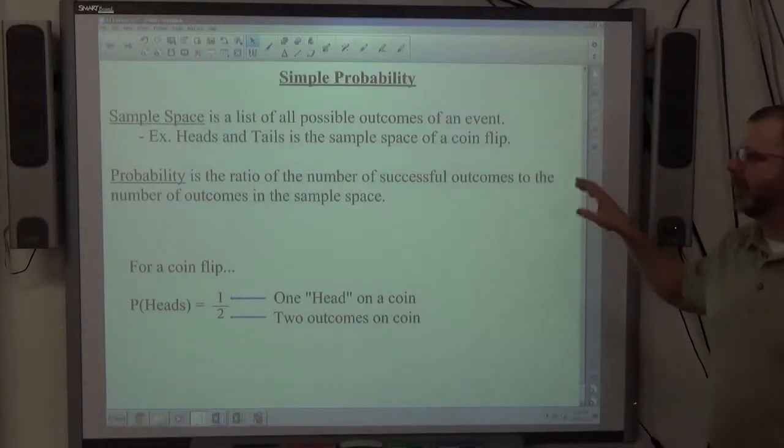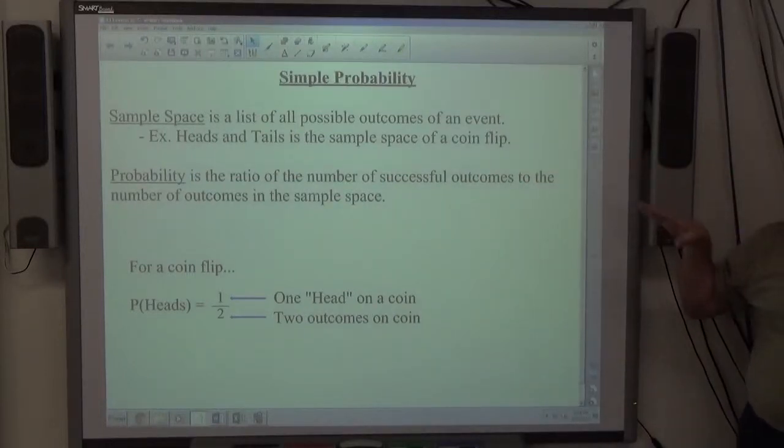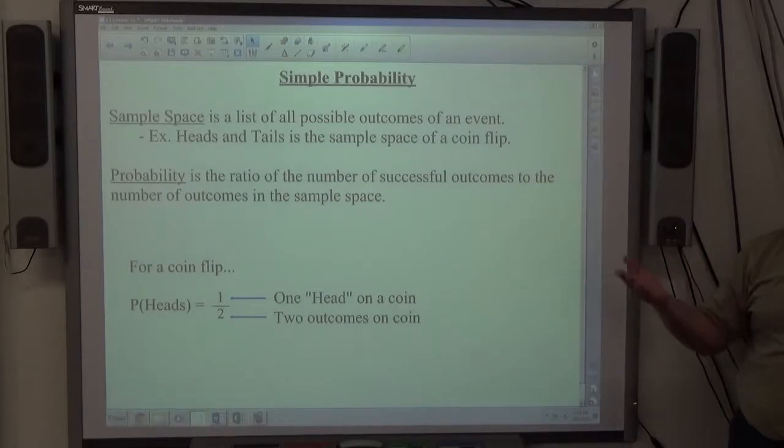Today we're going to deal with simple probability, a couple vocabulary words you need to know. Sample space is a list of all possible outcomes of an event. For example, flipping a coin, the sample space is heads and tails.